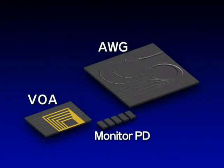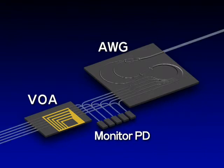Conventionally, the AWG, VOA, and monitor photodiode were connected by fusion splicing of optical fibers. Since some space had to be set for optical fibers, there were limitations to the downsizing of the module.